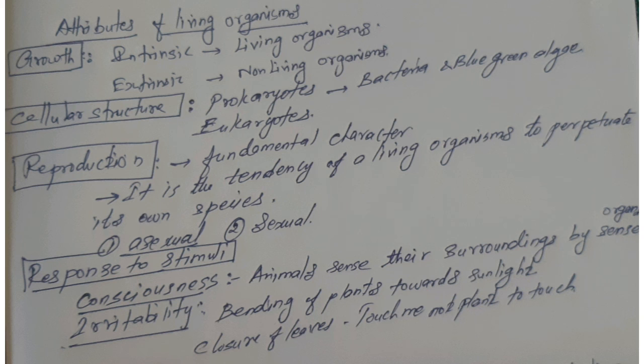Cytoplasm and nucleus together are called protoplasm. The increase in protoplasm is the growth in living organisms — this is called intrinsic growth. For extrinsic growth, non-living things like mountains, boulders and sand molds grow externally.